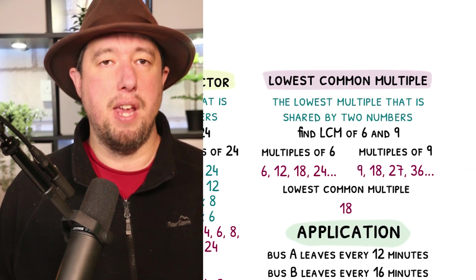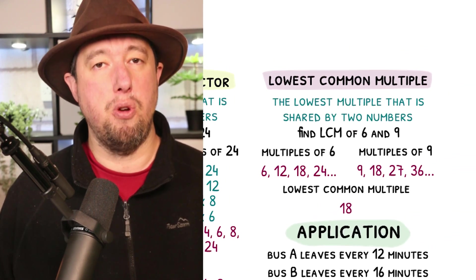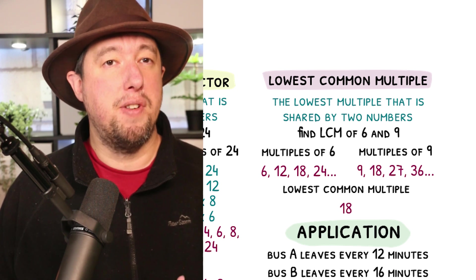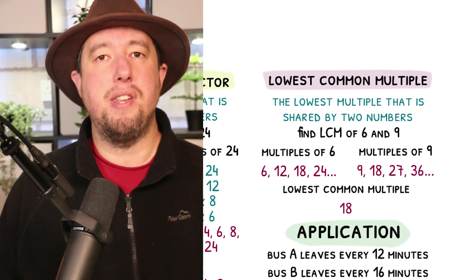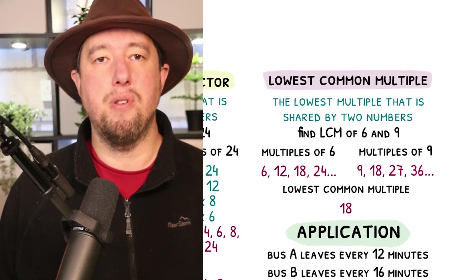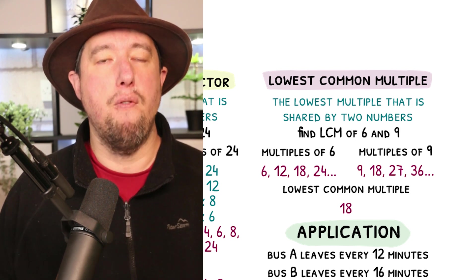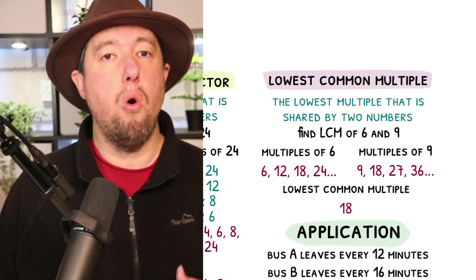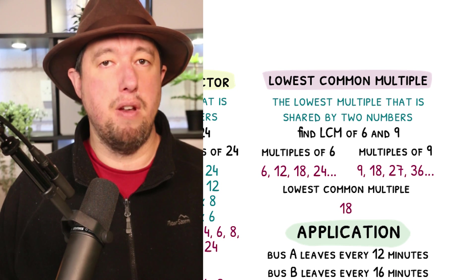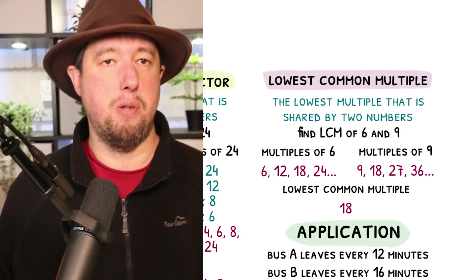Lowest common multiples, or LCM, are the smallest multiples 2 numbers share. The lowest common multiple of 6 and 9 is 18, since if you write out both times tables, this is the number you will find both have in common first. You can always multiply this number by 2, 3, 4, etc. to find other common multiples.